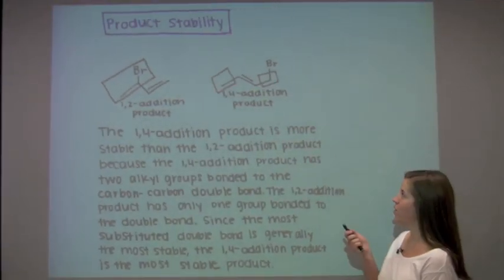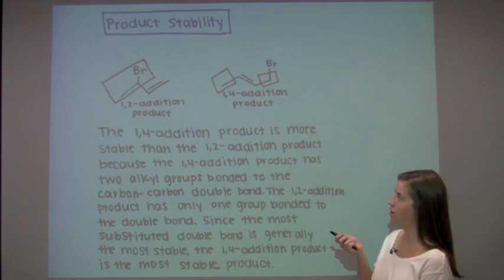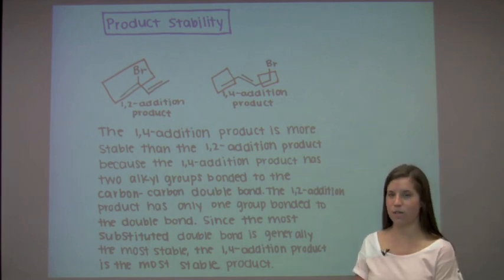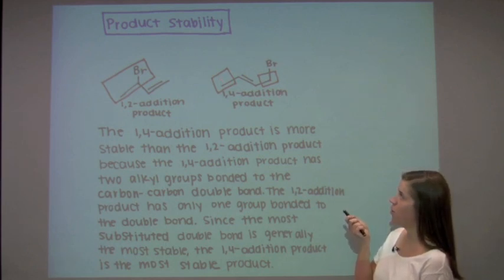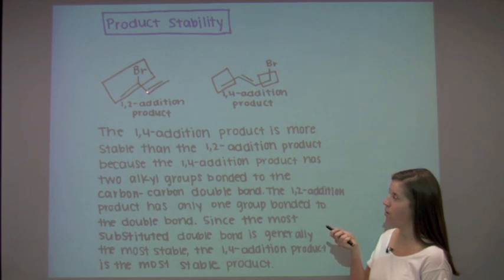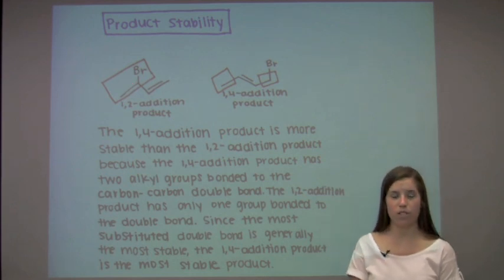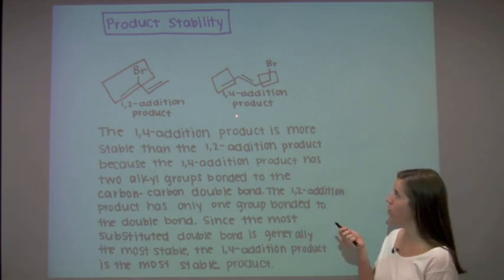Let's look at why the 1,4 addition product is more stable than the 1,2 addition product. The 1,4 addition product is more stable because it has two alkyl groups bonded to the carbon-carbon double bond, whereas the 1,2 addition product only has one alkyl group bonded to the carbon-carbon double bond. Since the more substituted alkene is generally the most stable, the 1,4 addition product is the more stable product.